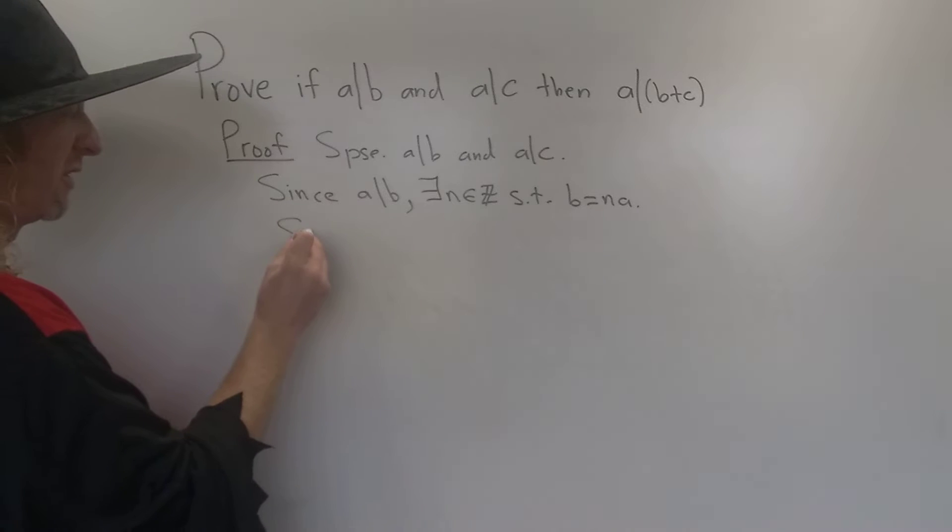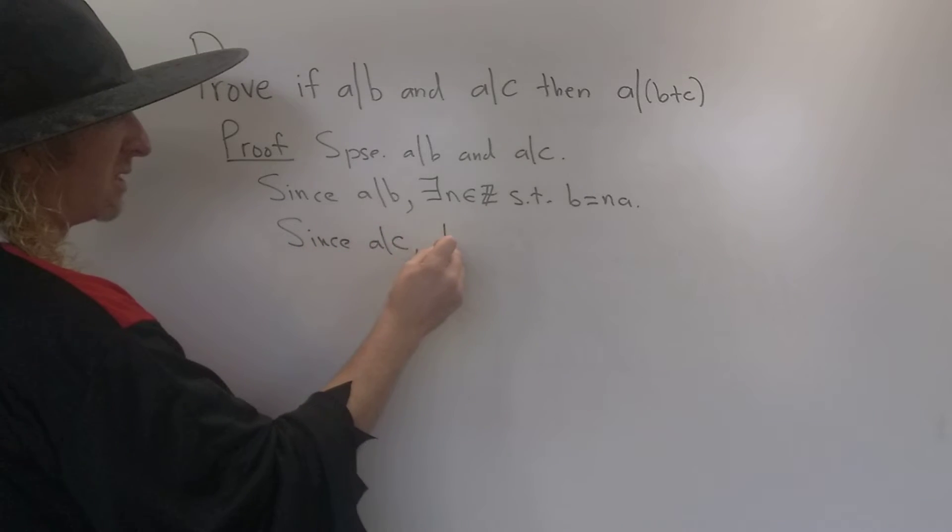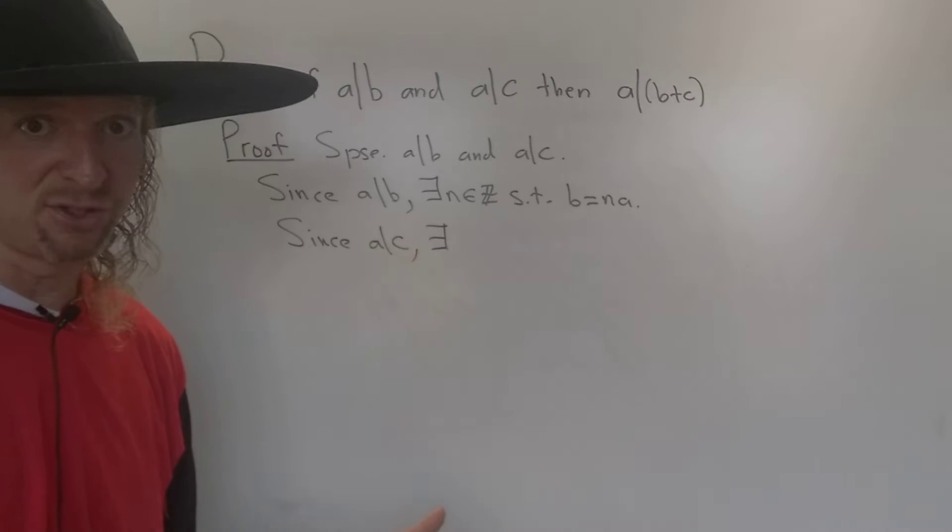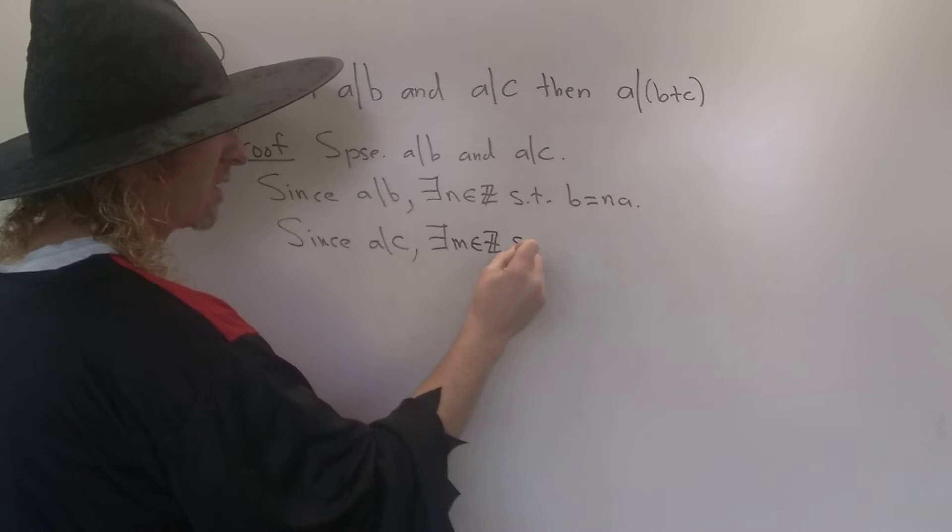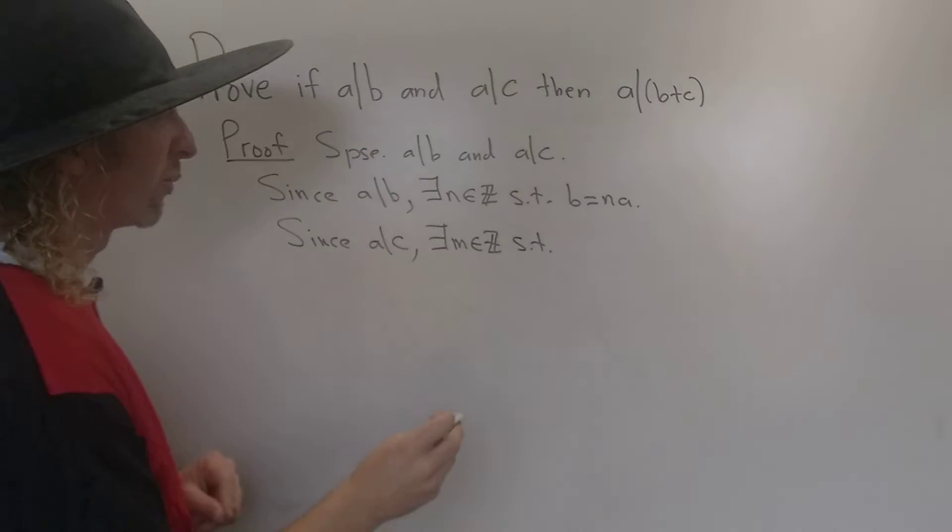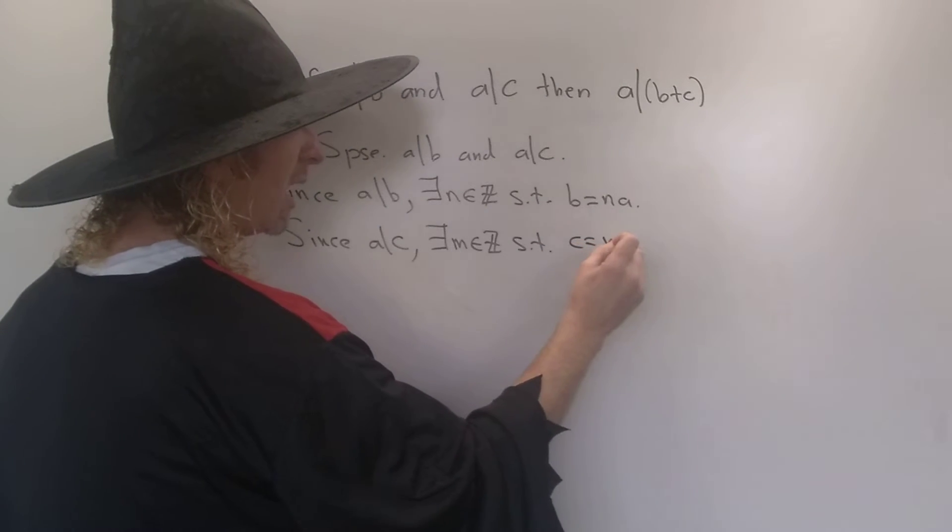Likewise, since A divides C, this means there exists possibly another integer. We'll call it M. So there exists an M such that C is a multiple of A. So you can write this as C equals MA.